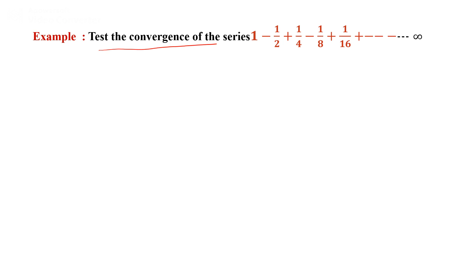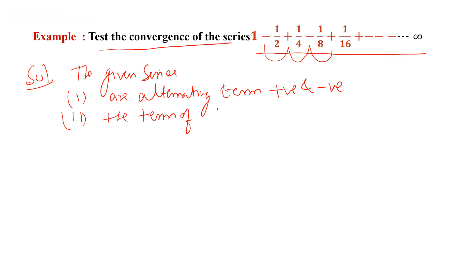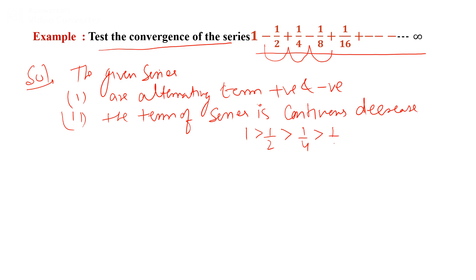Take one more example: test the convergency of the series 1 minus 1/2 plus 1/4 minus 1/8 plus 1/16 and so on. The signs are alternating. First condition: the terms have alternating signs, positive and negative. Second condition: the terms are continuously decreasing — 1 > 1/2, 1/2 > 1/4, 1/4 > 1/8, and so on. So the terms are continuously decreasing.